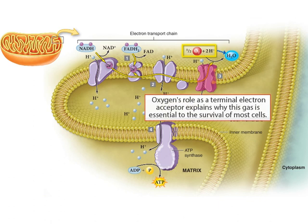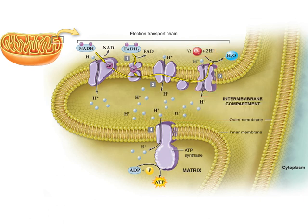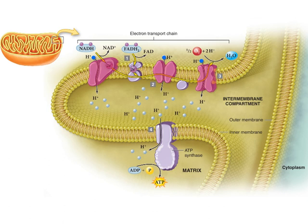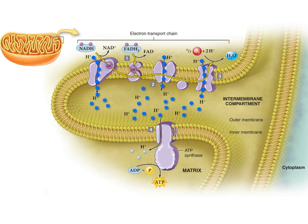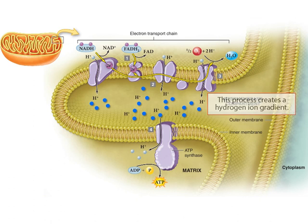Oxygen's role as a terminal electron acceptor explains why this gas is essential to the survival of most cells. Notice the hydrogen ions that are passing through the first, third, and fourth enzymes. These enzymes use the energy released by the electrons to actively pump hydrogen ions from the matrix to the intermembrane compartment. This process creates a hydrogen ion gradient, also called a proton gradient, meaning that the concentration of hydrogen ions in the intermembrane compartment is now higher than it is in the matrix.